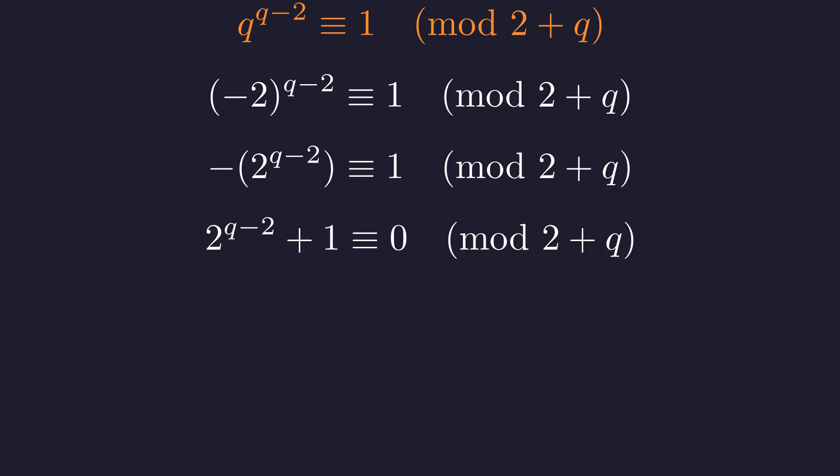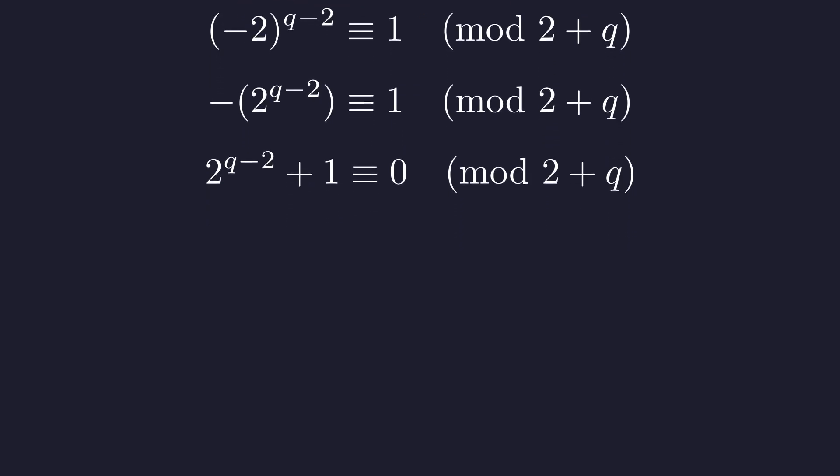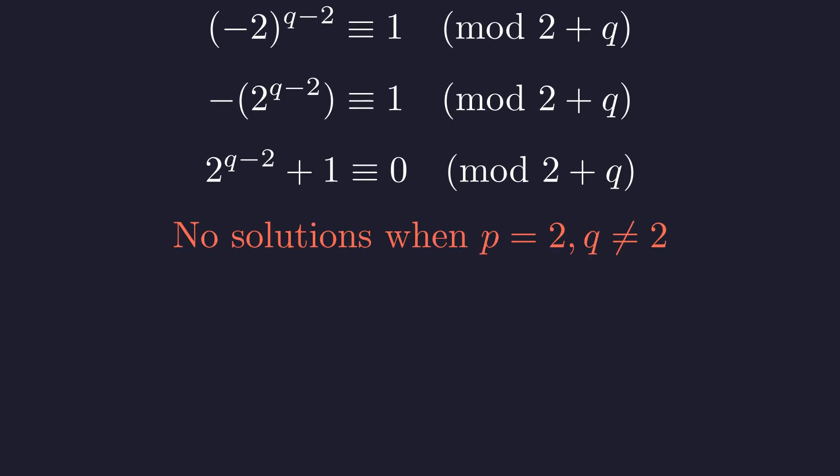This implies that q plus 2 must divide 2 to the power of q minus 2 plus 1. Let's test this for q equals 3. We check if 5 divides 3. It does not. For q equals 5, we check if 7 divides 9. It does not. It can be rigorously proven that this never holds for any odd prime q. So, we've reached a powerful conclusion. There are no solutions when one prime is 2, and the other is a different prime. This eliminates a huge number of possibilities.